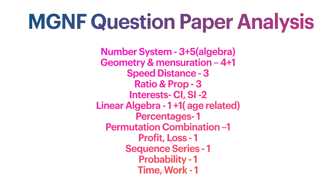Permutation and combination — one question. Profit and loss — one question. Sequence, series or progressions — one question. Probability — one question. Time and work — one question. So this is a rough distribution of questions from the Mahatma Gandhi National Fellowship question paper 2020. Basically, these are the topics you should learn. Apart from that, we can't predict a distribution — the IIM can change the distribution at their will.